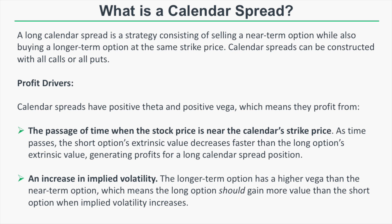Let's define what a calendar spread is. A long calendar spread is a strategy consisting of selling a near-term option while also buying a longer-term option at the same strike price. Calendar spreads can be constructed with all calls or all puts. An example would be selling a 100 call and buying a 100 call in a further expiration cycle.